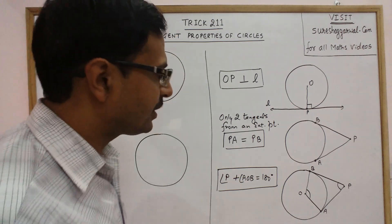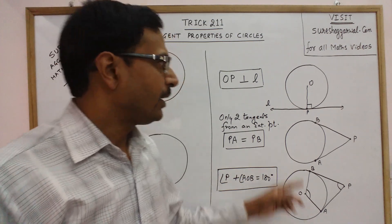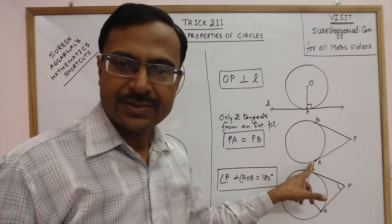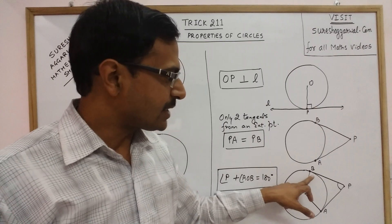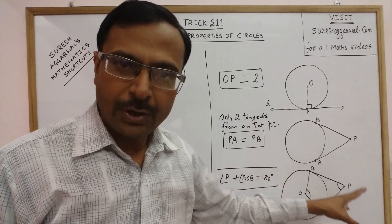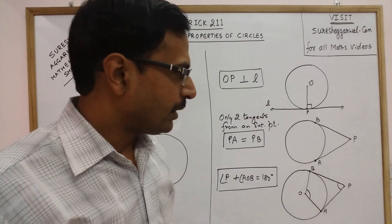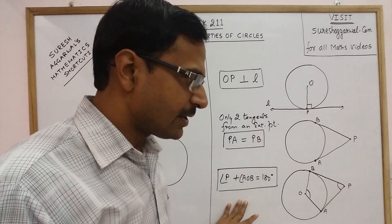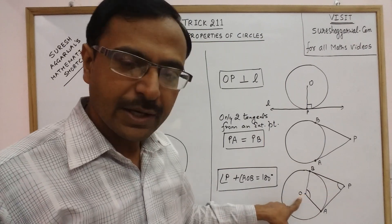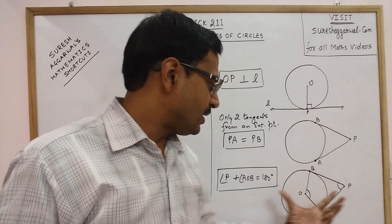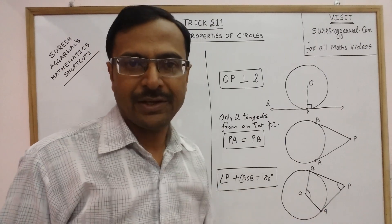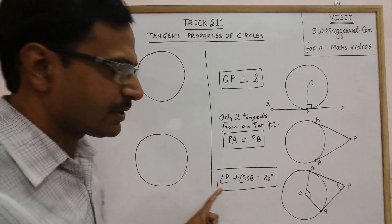You can understand this simply: using the first property, the radius and tangent are always perpendicular, so angle OAP is 90° and angle OBP is 90°. Using the angle sum property of a quadrilateral, you can derive that the angle made by the tangents and the angle between the radii will always be supplementary — that is, their sum will be 180°. This is the third property.